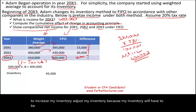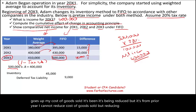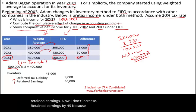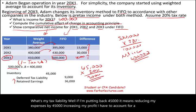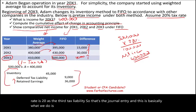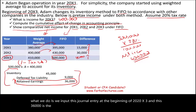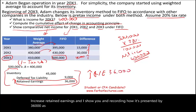We need to increase and adjust inventory by $45,000, because under FIFO inventory would have been higher. This reduces cost of goods sold from prior years, which increases profit, which in turn would have increased retained earnings. However, we don't increase retained earnings by the full $45,000 because we have a tax liability associated with it. At a 20% tax rate, the tax liability is $9,000. The journal entry is recorded at the beginning of 20x3, and the after-tax adjustment of $36,000 is recorded as a prior period adjustment to beginning retained earnings due to the change in accounting principle.